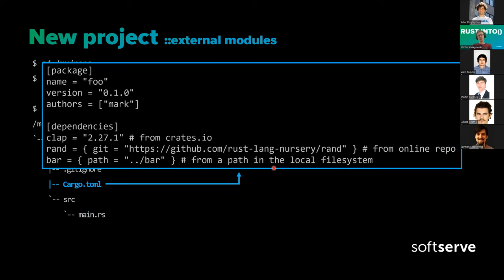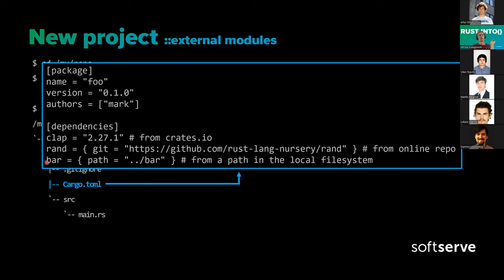The cargo file can be used for stating dependencies — I mean external modules, like some math library or HTTP library. There are many ways of declaring external modules: by simply stating the version (it will be downloaded from crates.io), like the CLAP module where you just state the version. You can also state an online repository, like the RAND module where you just give a GitHub link and say it's a git repository. And you can also give a path in the local file system to another project — for example, another Rust project called 'bar' in the same parent directory.